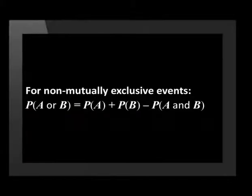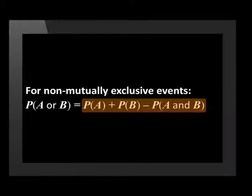If events are not mutually exclusive, this means that they can occur at the same time. We calculate the probability for these events by using the following rule. If events A and B are not mutually exclusive, then the probability of A or B is equal to the probability of A plus the probability of B minus the probability of A and B.